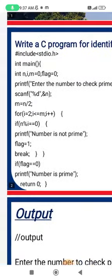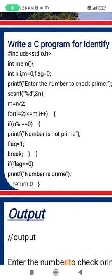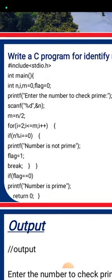First, print "Enter the number to check prime," then scan that with percent d, n. The main logic: m equals n divided by 2, for i equals 2, i less than or equal to m, i plus plus.